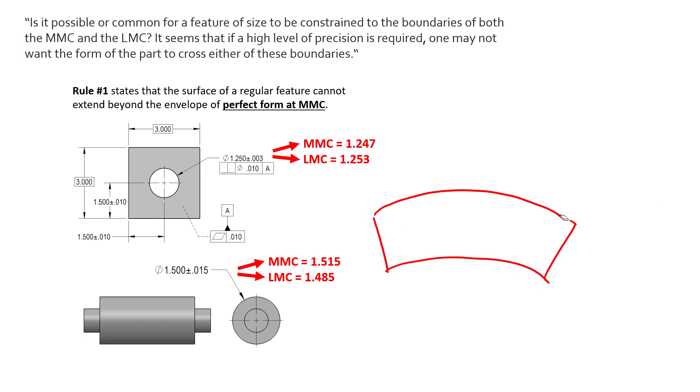So if we picture the outside diameter having a little bit of bow to it, we would say that the envelope restricts the amount of form error that's going to happen up to 1.515. So if this diametrically measures at LMC